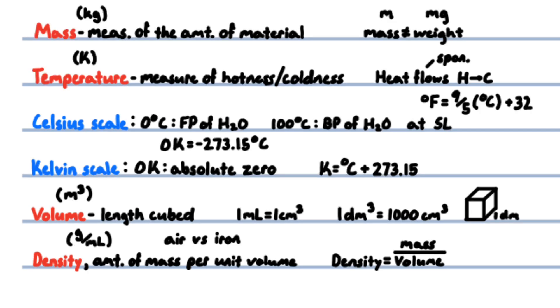Temperature is the measure of hotness or coldness of an object. Heat flows spontaneously from hot to cold. Celsius scale was defined as zero degrees C being the freezing point of water and 100 degrees C being the boiling point of water at sea level. The temperature in Fahrenheit equals nine over five times the temperature in Celsius plus 32.